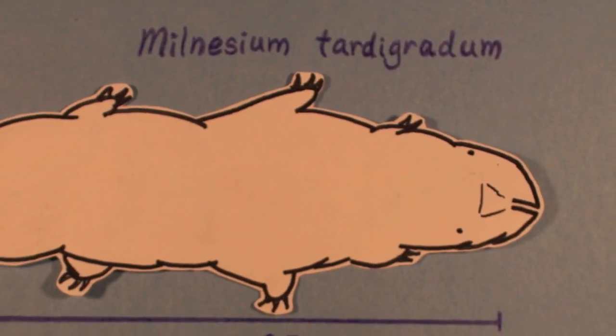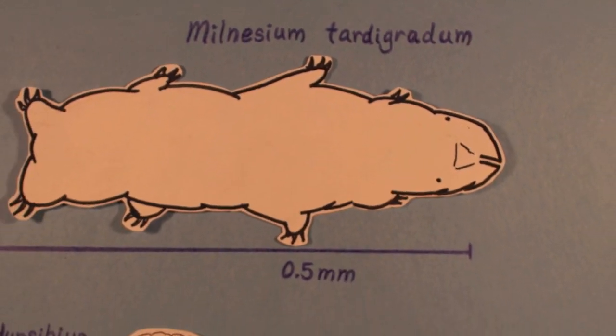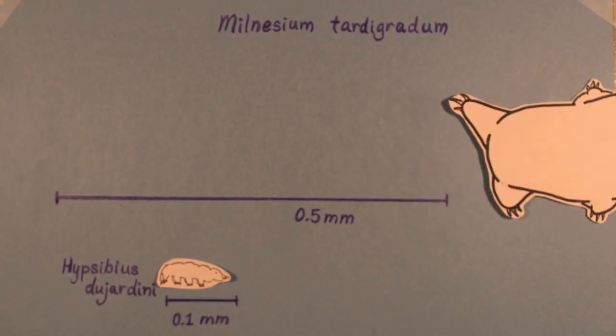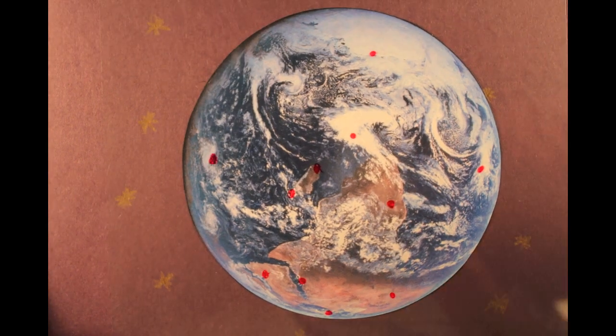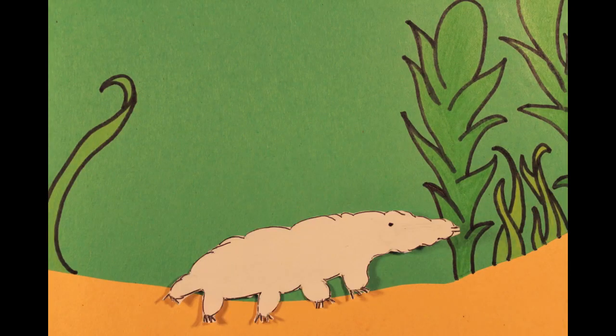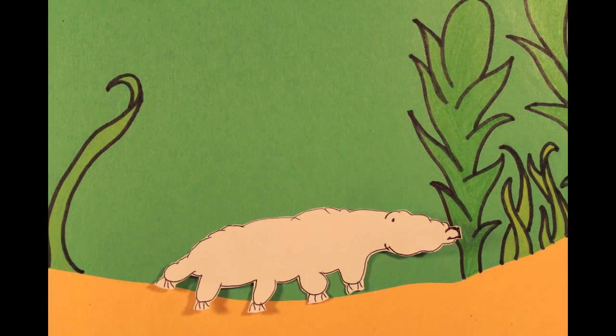They're too small to see. They walk with tiny, tiny claws. They live everywhere. Their mouth is shaped like a straw.